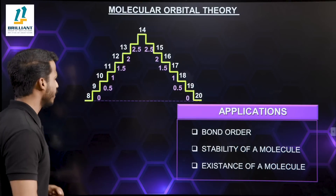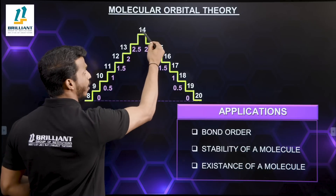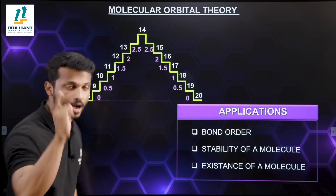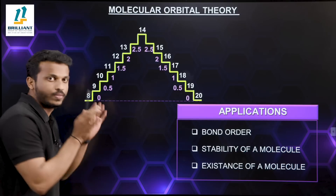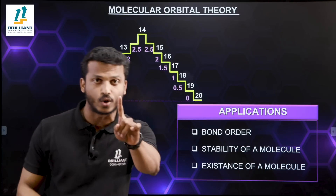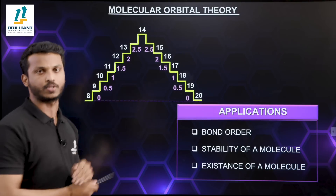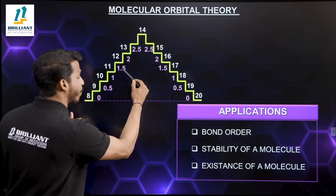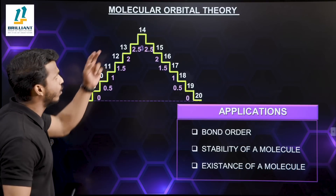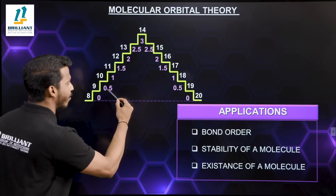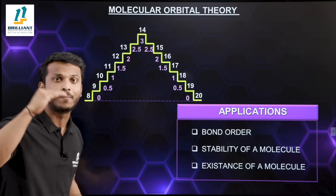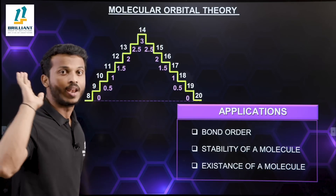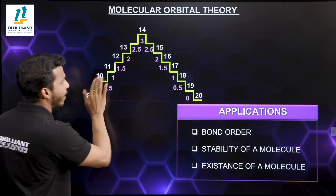How to memorize this pyramid? Starting from eight electrons: bond order is zero. Then we add 0.5 at each successive step: zero, 0.5, 1, 1.5, 2, 2.5. And for the 14-electron system at the top, the bond order is 3. So from 8 to 14 electrons, we are adding 0.5 at each step.